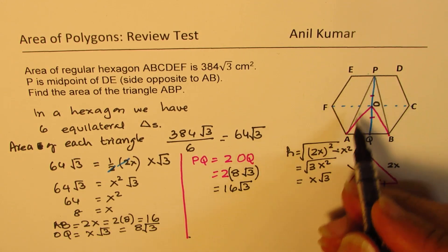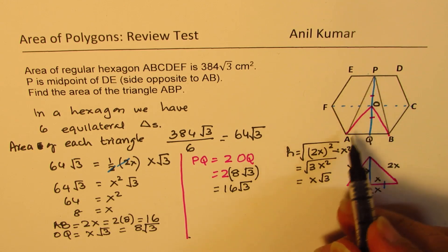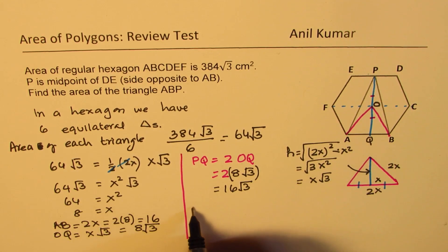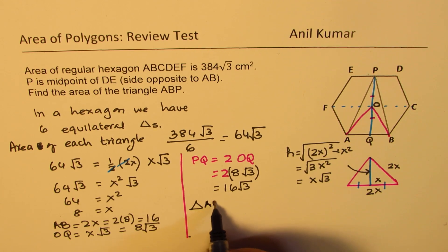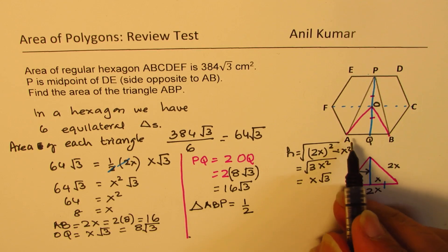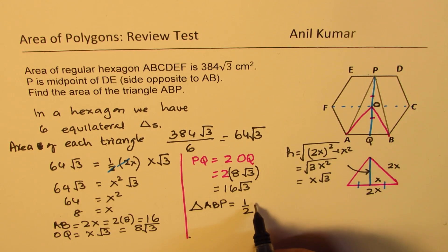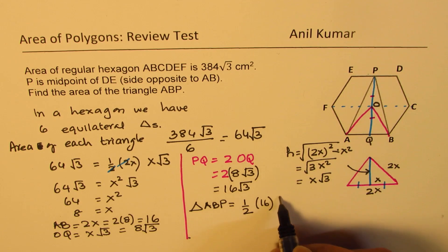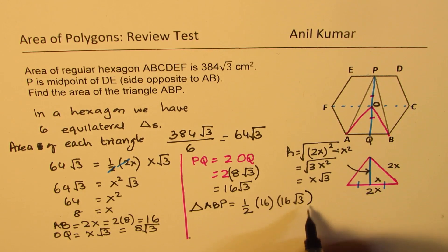For finding the area of triangle ABP, we have all the required things. Area of triangle ABP will be equal to half of AB, which is 16, times the total height, which is 16√3.